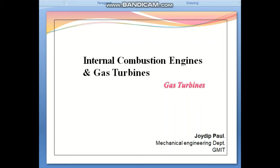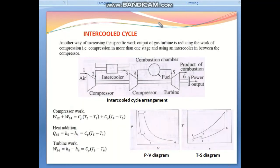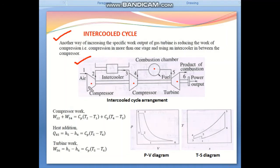We will also do some numericals on the different cycles. The intercooler cycle is another way of increasing the specific work output of a gas turbine by reducing the work of compression — that is, compression in more than one stage using an intercooler between the compressors. Let's see the working principle: Compressor 1, Compressor 2, the turbine, combustion chamber, and the intercooler.